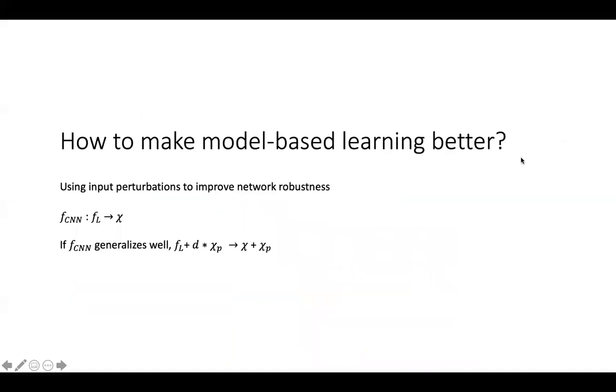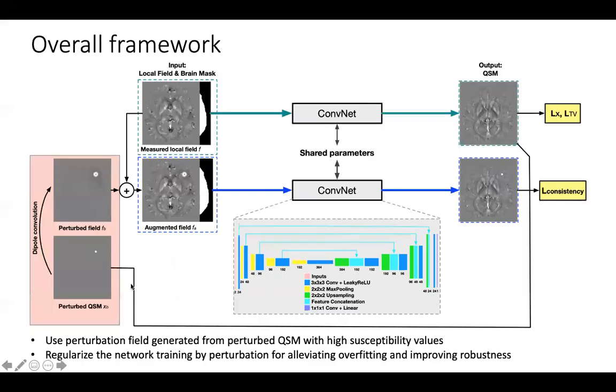In this paper, we want to make the model-based learning better. Our idea is using input perturbations to improve the network robustness. We generated the perturbed QSM using simulated susceptibility sources with high susceptibility values. We perform the dipole convolution to get the perturbed field. The measured field and the augmented field are input to the convolutional neural network to get the QSM output.